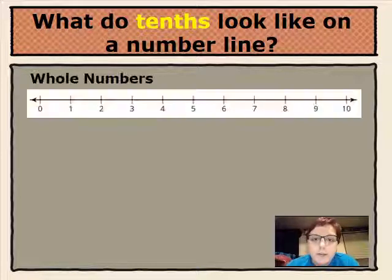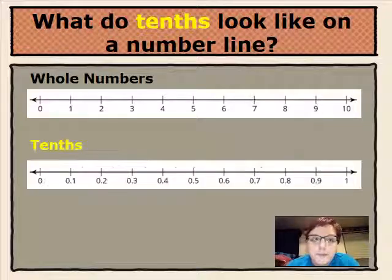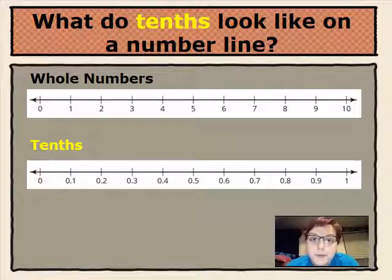A number line can have whole numbers and fractions, but they can also have decimals. In between whole numbers on the number line, there are tenths. The number line is partitioned into ten equal portions. Each one is called a tenth. You start counting from one tenth all the way to nine tenths.